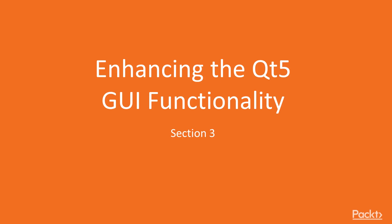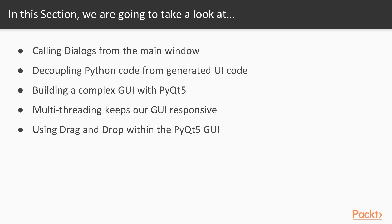Hello and welcome to the third section, in which we will be enhancing the PyQt5 GUI functionality. First we will show how to call a dialog window from a main window. Then we will separate the designer-generated UI code from our Python code. After that we will build a more complex GUI. In order to keep our GUI responsive we will use multiple threads, and in the last video of this section we will explore some nice features PyQt5 offers.